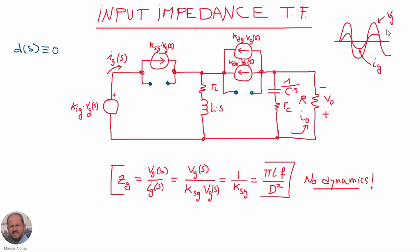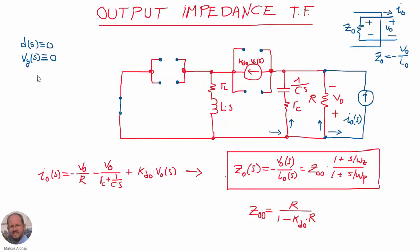We can also obtain the input impedance of our converter, defined as the ratio between the perturbation in the peak line voltage over the perturbations in the peak line current. In this case we make zero again the perturbations on the duty cycle and solve the circuit to obtain the ratio between m_vg and ig. We obtain this expression for the input impedance, which finally has this value: 2Lf divided by d squared. So we can see that there is no dynamics for the input impedance of the converter.